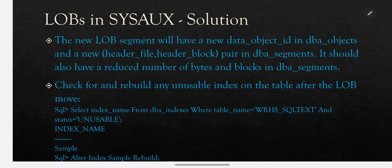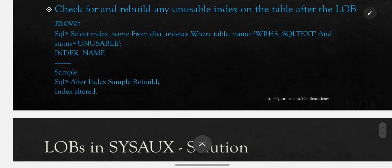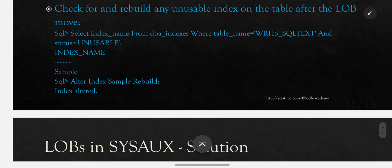The new LOB segment should also have a reduced number of bytes and blocks in dba_segments. Check for and rebuild any unusable indexes on the table after the LOB move: SELECT index_name FROM dba_indexes WHERE table_name = 'WRH$_SQL_TEXT' AND status = 'UNUSABLE'; If you find anything, run ALTER INDEX <index_name> REBUILD;